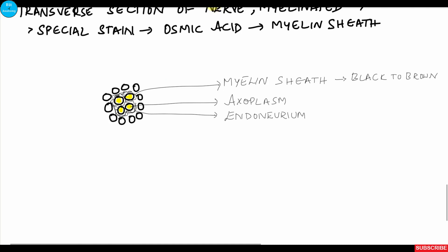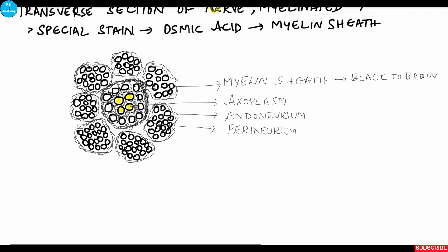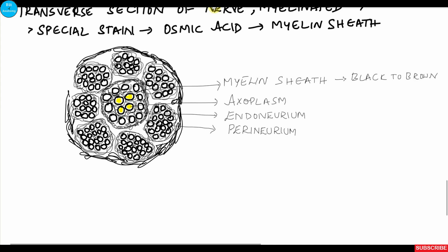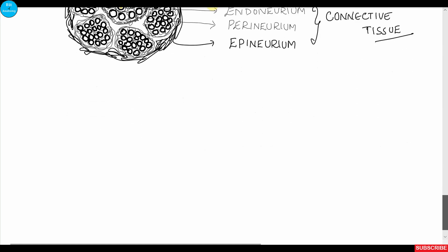Surrounding each axon there is a small amount of connective tissue called the endoneurium. There will be bundles of axons, and each bundle is surrounded by a slightly thicker connective tissue called the perineurium. The entire nerve is surrounded by a thick coat of connective tissue called the epineurium. These endoneurium, perineurium, and epineurium are the connective tissue coverings which bind the axons together and act as a passageway for blood vessels and lymphatics.